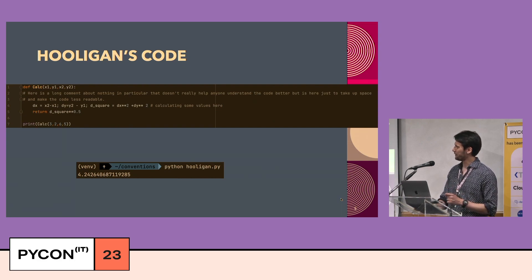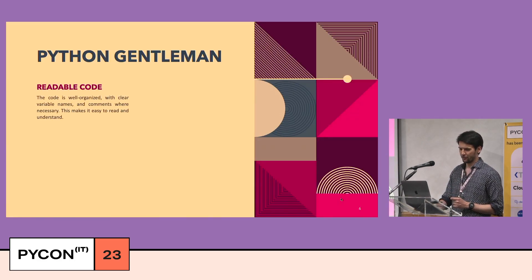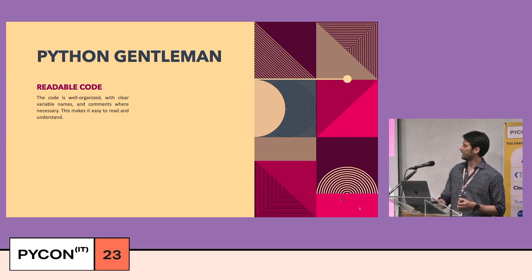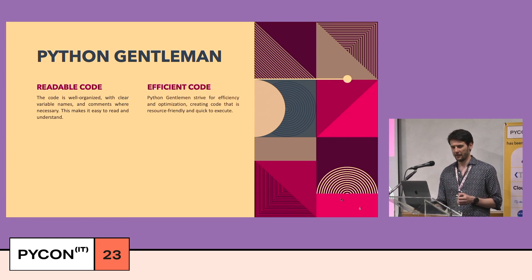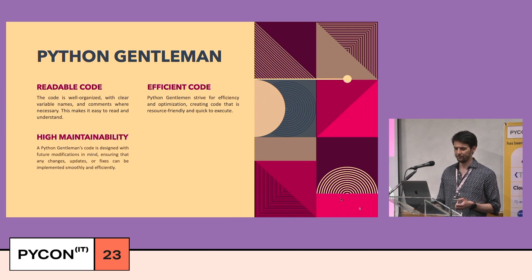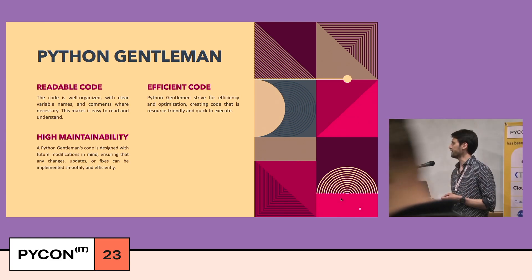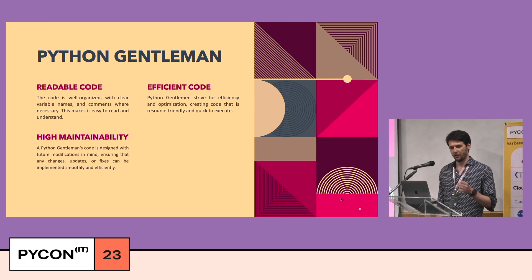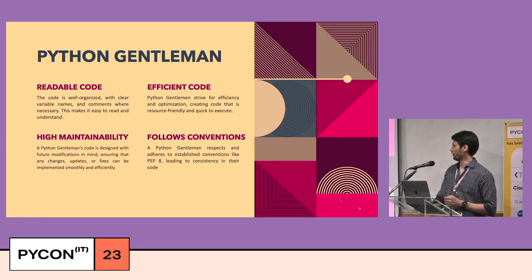Let's move on to defining a Python gentleman. His code is well organized with clear variable names and comments where necessary, making it easy to read and understand. He also writes efficient code, striving for efficiency and optimization, creating code that is resource-friendly and quick to execute. Another thing is high maintainability — a Python gentleman's code is designed with future modifications in mind. And he does follow conventions, respecting and adhering to established conventions like PEP8, leading to consistency.